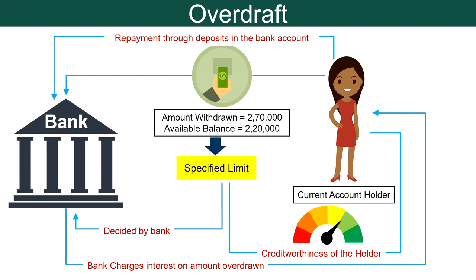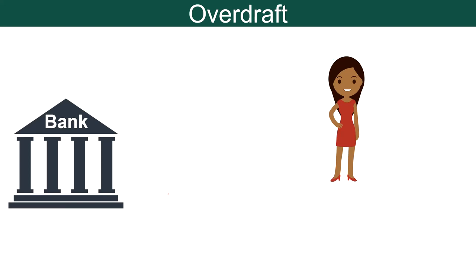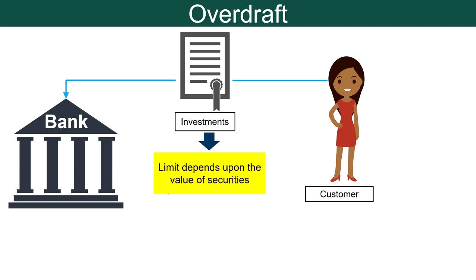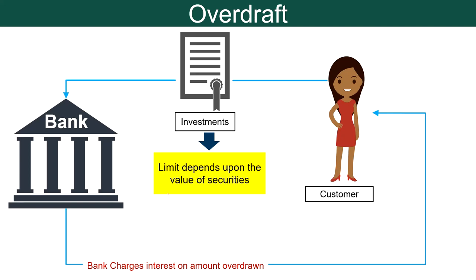There is one more instance when the bank provides overdraft facility to individual customers — that is against investments such as shares and debentures, term deposits like fixed deposits or recurring deposits, National Savings Certificates, LIC policies, UTI units, etc. In this case also there is an overdraft limit which depends on the value of the securities pledged and the repayment capacity of the customer. The bank charges interest on the amount overdrawn for providing this facility.